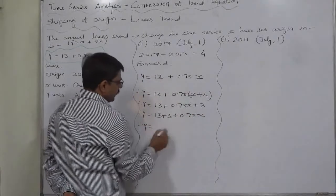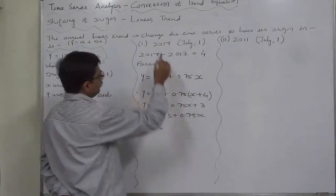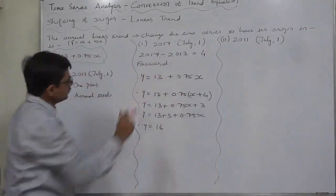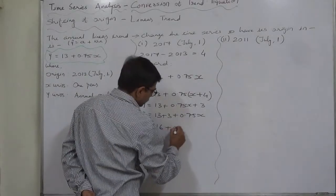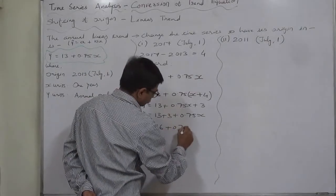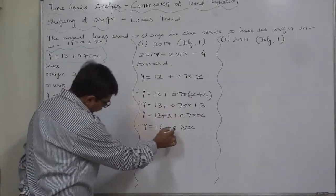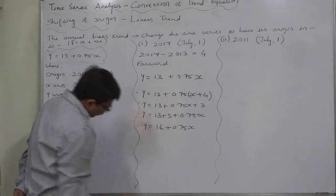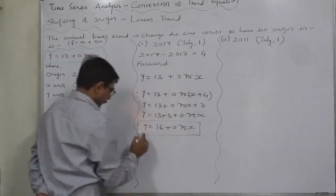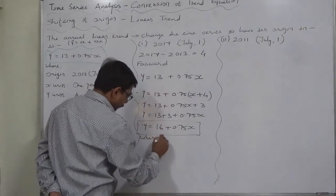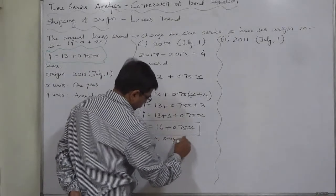So now the new trend with origin in 2017 July 1 is: estimated value of y equals to 16 plus 0.75x.